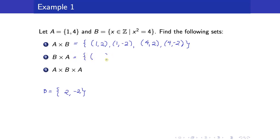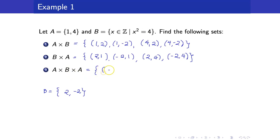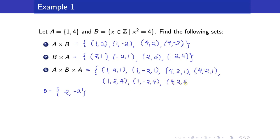For B cross A, we are starting with elements from B, forming all possible ordered pairs with elements of A. We can also form A cross B cross A, and the elements would be ordered triples. The elements of this set are 8 ordered triples.